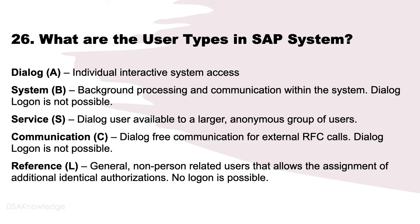What are the user types in the SAP system? Dialog user: for individual interactive system access. System user: for background processing and communication within the system — dialog logon is not possible. Service user: for dialog access available to a larger, anonymous group of users. Communication user: for dialog-free communication for external RFC calls — dialog logon is not possible. Reference user: for general, non-person-related users that allow assignment of additional identical authorizations — no logon is possible.